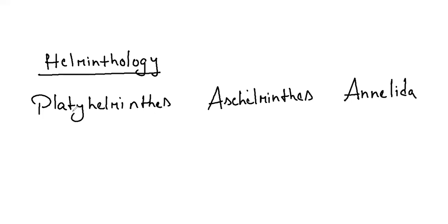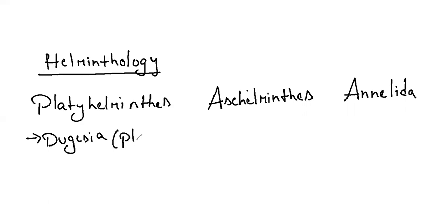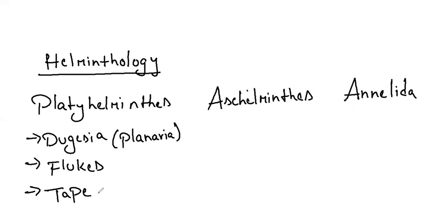Coming to platyhelminthes, we otherwise call them flatworms. Some examples for platyhelminthes: dugesia, which we call planaria. And we have the flukes — liver fluke, blood fluke. And we have the tapeworm, which is Taenia solium. And next we have the bovine worm, pork worm.